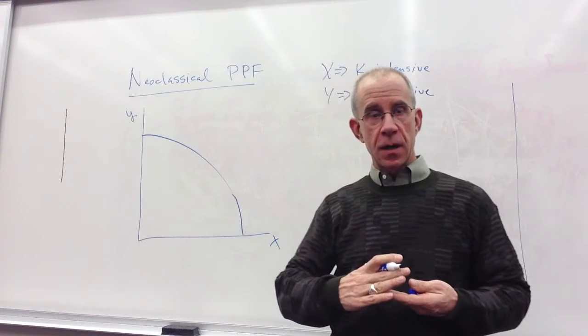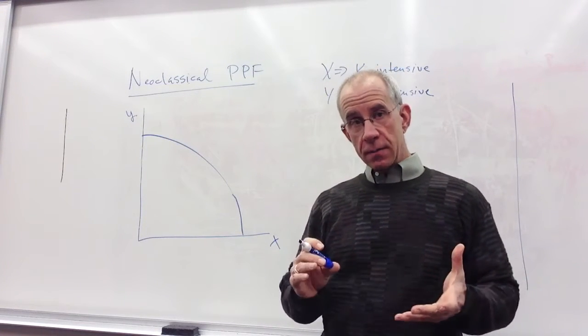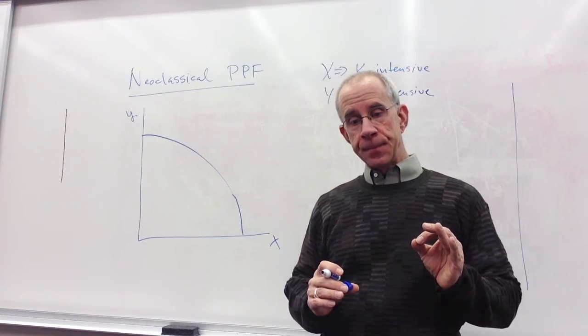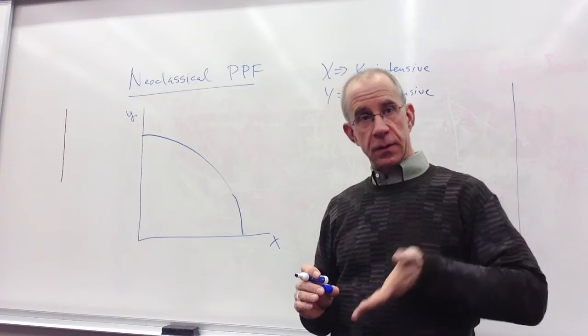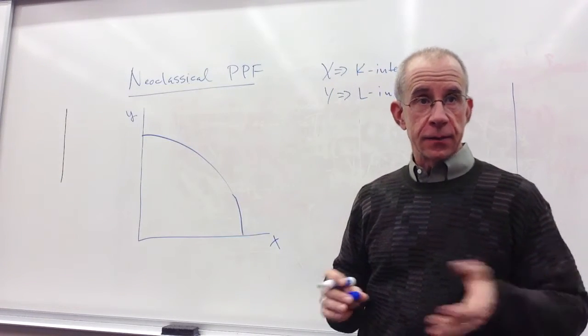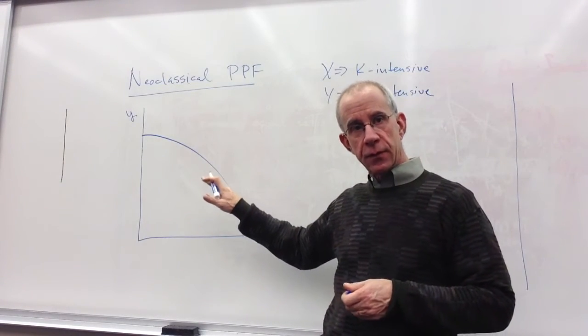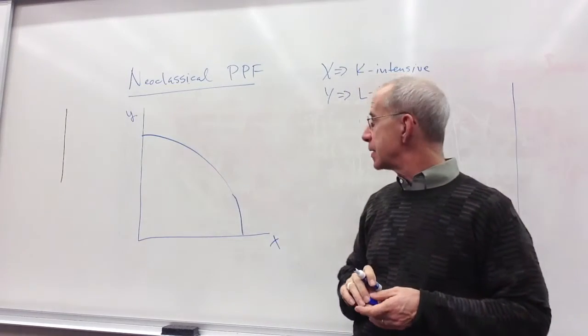Now this is in sharp contrast to the Ricardian model where the PPF was a line, was a linear function. So the trade-off in the PPF is quite different in the neoclassical framework.